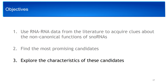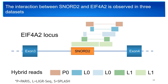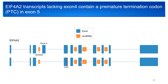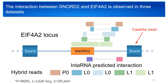My third objective was to explore the characteristics of these candidates. We mainly focused on one interaction — the only one that had all the characteristics I described. This is the interaction between the snoRNA SNORD2 and the downstream intron region of its host gene EIF4A2. This interaction was seen in three different datasets: one from PARIS and two from LIGR-seq. One key feature that makes this candidate interesting is that the next exon downstream of SNORD2 is a cassette exon. Transcripts lacking exon 4 contain a premature stop codon in exon 5, which results in targeting and degradation of these transcripts by the NMD pathway. Using the RNA duplex prediction tool IntaRNA, we observed a strong predicted interaction region within the SNORD2–EIF4A2 interaction, as represented by the purple and pink colors.